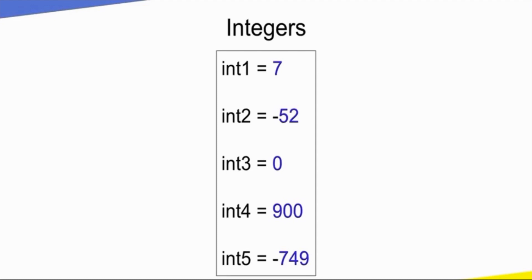Integers are whole numbers — no decimal point. For example: 1, 2, 3, 4, or minus 1, 2, 3, 4, up to any number, up to infinity. That is the integer data type.